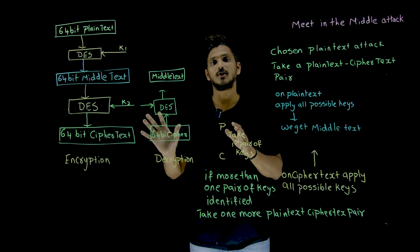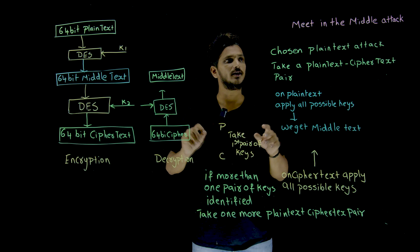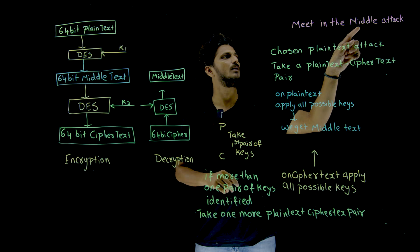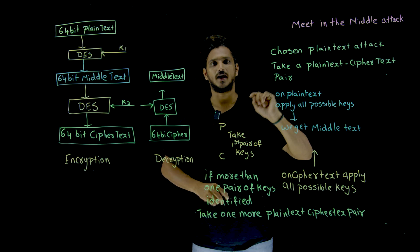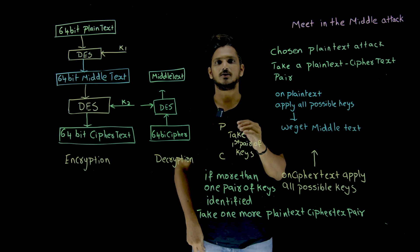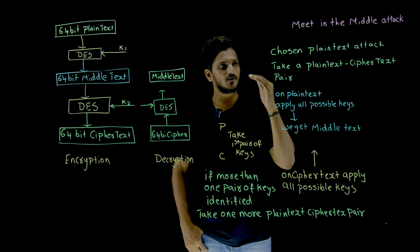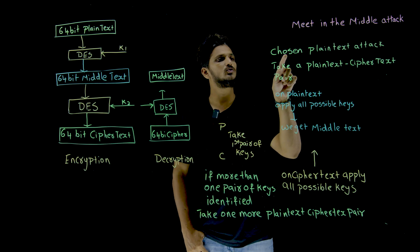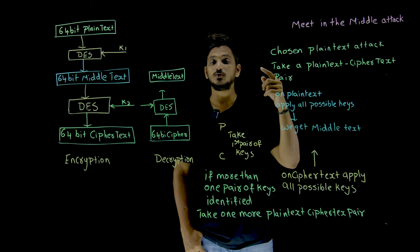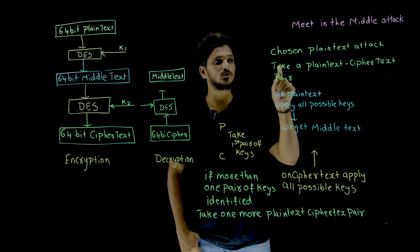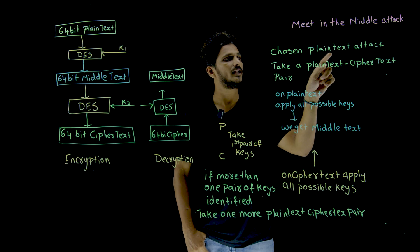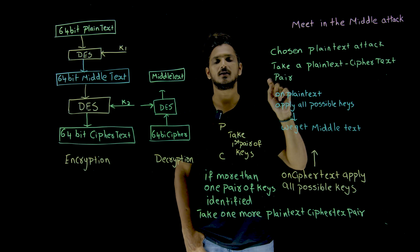But there is a flaw in 2DES. The flaw is the meet in the middle attack. The attack used is a chosen plaintext attack.